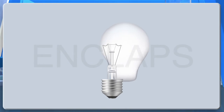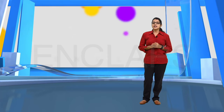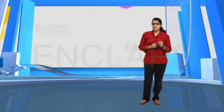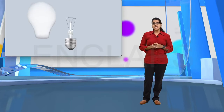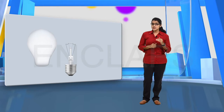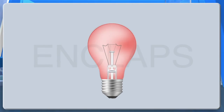If air is present inside the bulb, the filament oxidizes with the oxygen in the air and ruptures. Therefore, the inner side of the bulb is evacuated to prevent the oxidization of the filament and prolong its life. Similarly, to reduce the evaporation of the filament, the vacuum inside the bulb is filled with an inert gas at a lower pressure.